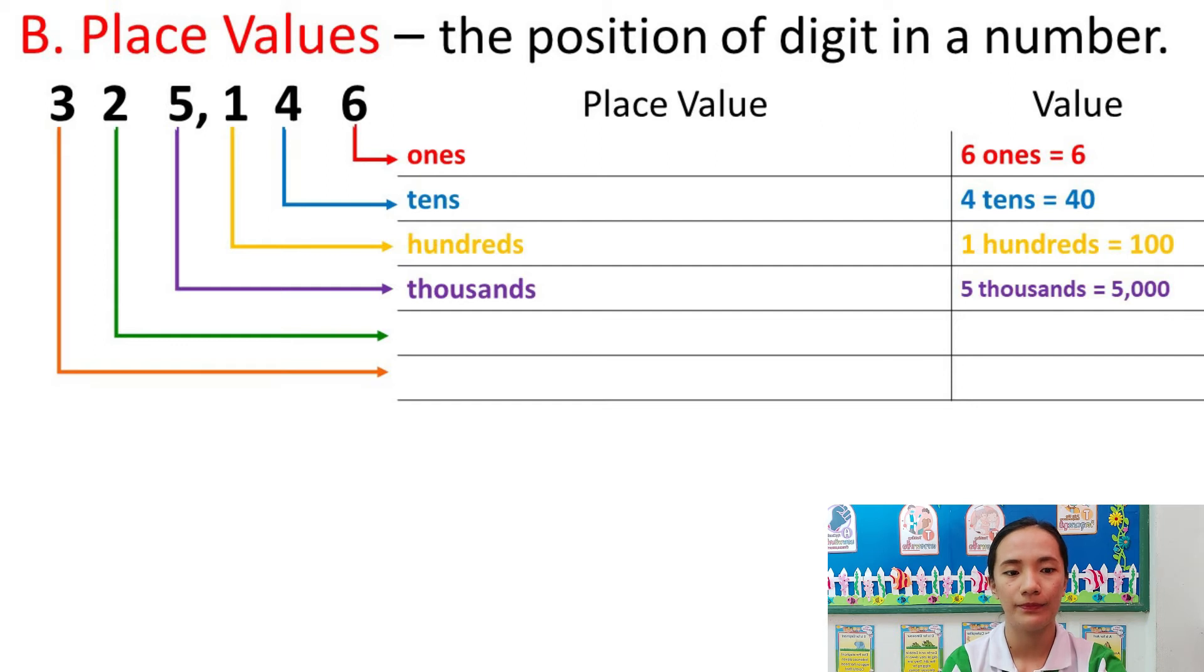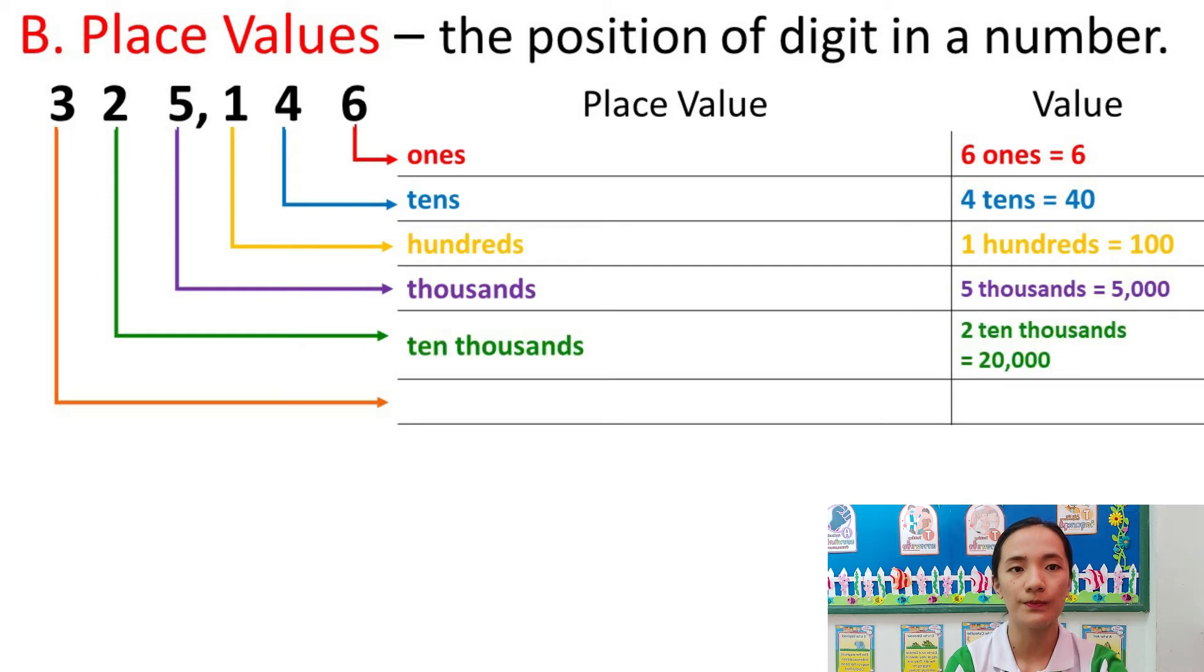Next, 1. The place value is hundreds and the value is 100. Next, number 5. Its place value is thousands and the value is 5,000. Next, 2. Its place value is ten thousands and the value is 20,000.